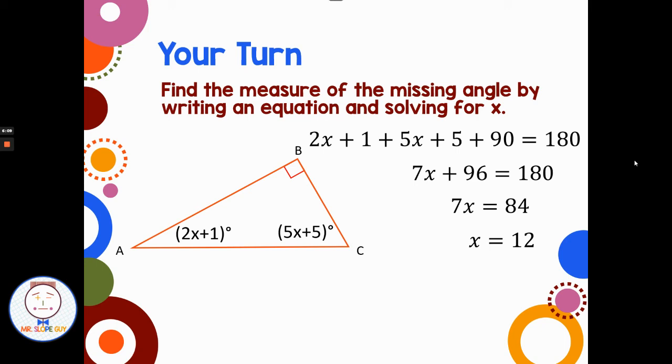So let's first look at angle A. Angle A is 2x plus 1. We found out that x was 12, so I can put 12 in for x. So I'd have 2 times 12 plus 1. Well, 2 times 12 is 24 plus 1 is 25. So angle A is 25 degrees.